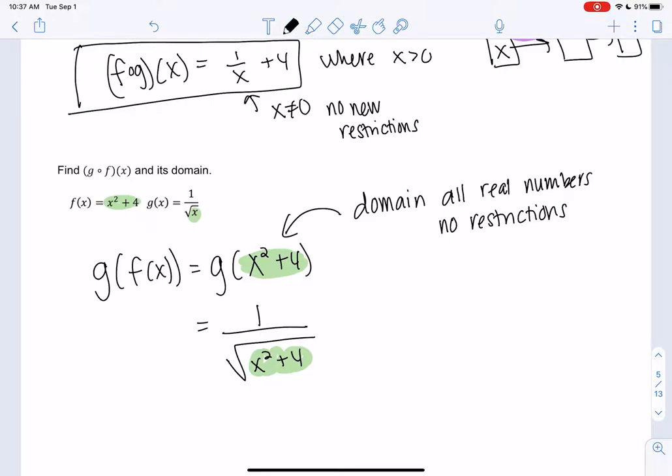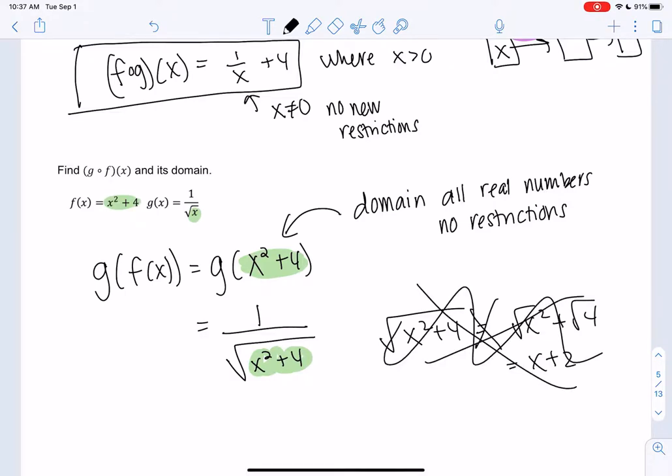So I see students in calculus do this all the time. x squared plus 4 in a square root is not x plus 2 separately. No. You cannot square root sums. Don't do it. It is what it is. So you cannot square root sums.